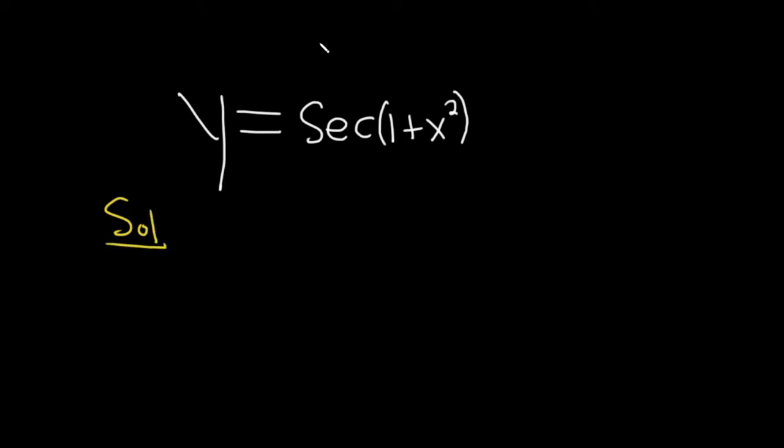Recall the derivative of secant is secant tangent. So if we just had the secant function, its derivative is simply secant x tangent x. However, in this case we have the secant of 1 plus x squared, so what we have to do is use the chain rule.